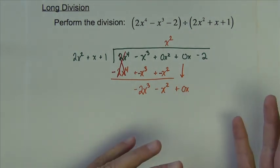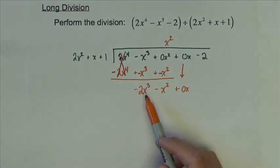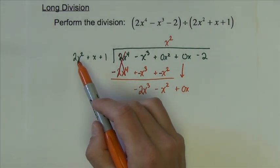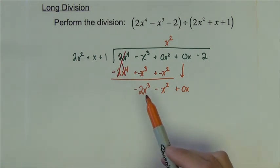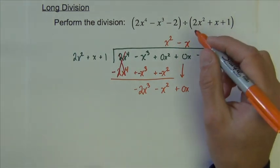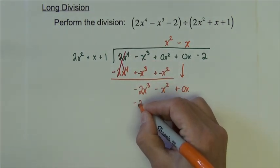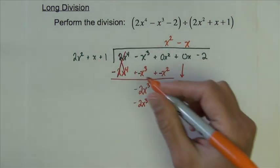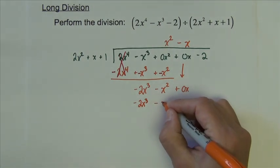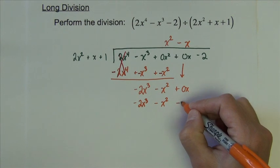And then we repeat the process all over again. So how many times does 2x squared go into negative 2x to the third? Or what can I multiply this term by to get this one? And that's an easier way to think about it. It would be negative x. Now we multiply. Negative x times 2x squared is negative 2x to the third. Negative x times positive x is negative x squared. Negative x times 1 is negative x.